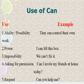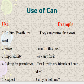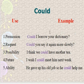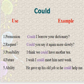Now let's look at 'Can.' Can expresses Ability, Possibility, and Permission. For ability: 'I can lift this box.' For impossibility: 'We cannot fix it.' For asking permission: 'Can I invite my friends at home today?' For request: 'Can you help me?' And for giving permission: 'You can share it again.'